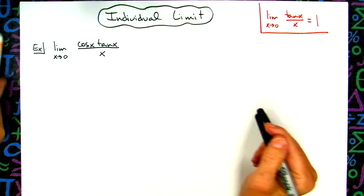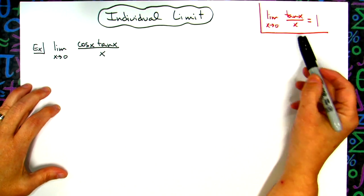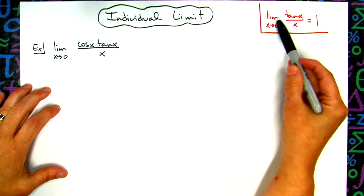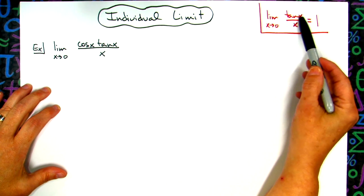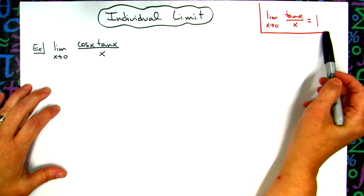In this video we're going to take a look at an individual limit. We are going to use the fact that the limit as x approaches 0 of tangent x over x is equal to 1.